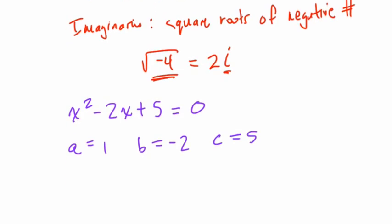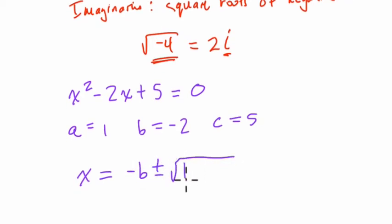The quadratic formula, as scary as it looks, is quite beautiful. It says that x always equals negative b plus or minus the square root of b squared minus 4ac over 2a.